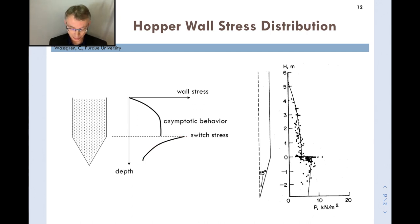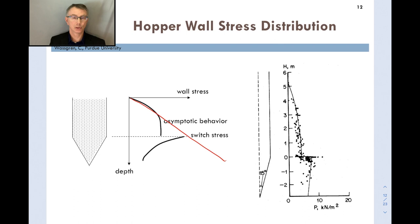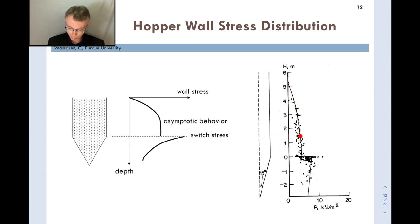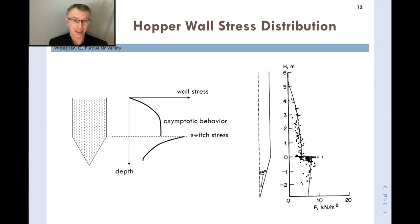After the switch stress, the stress starts to decrease as you approach the apex of the hopper. Experimental data confirms this behavior — a long cylindrical section showing asymptotic stress, then the switch stress, followed by decreasing stress approaching the apex. This stress distribution has important design implications: the switch stress region must be carefully designed for structural strength so it doesn't cause damage to the device.